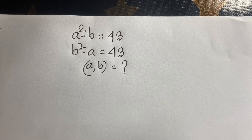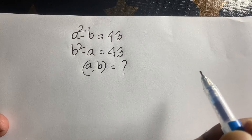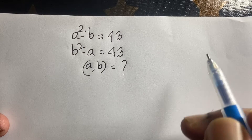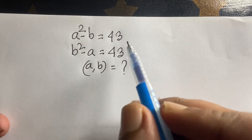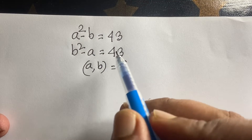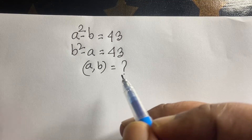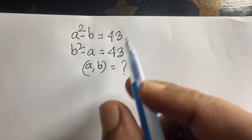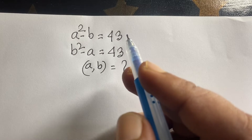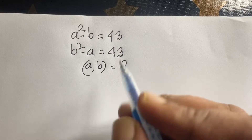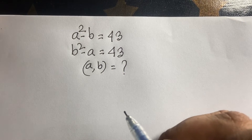Hello everyone. In this video we will solve this math question: A squared minus B is equal to 43, and B squared minus A is equal to 43. We will find out the values of A and B in this question.